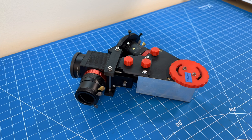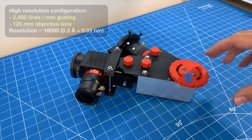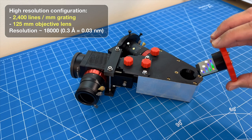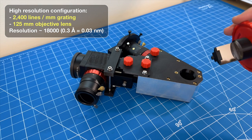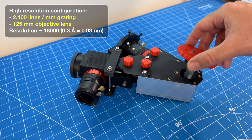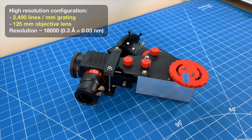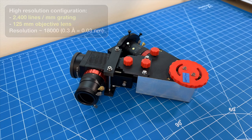And to configure my spectrograph to work in high resolution, I just swapped the diffraction grating with one that has 2400 lines per millimeter, and the objective lens with one that has a 125 millimeter focal length. This configuration gives me a spectral resolution of 0.3 angstrom or 0.03 nanometer.